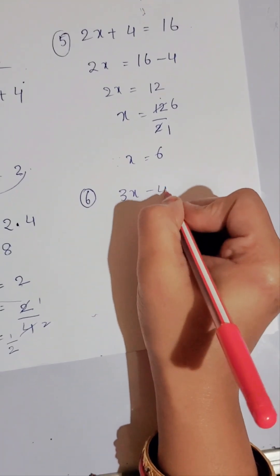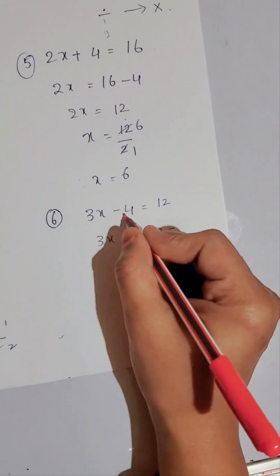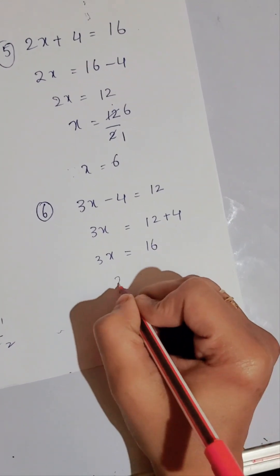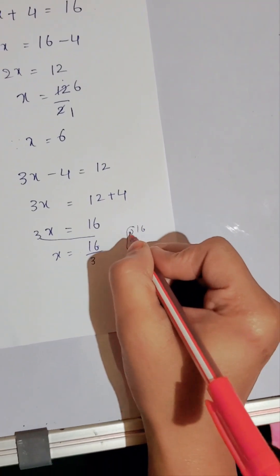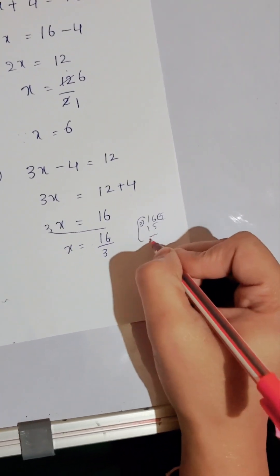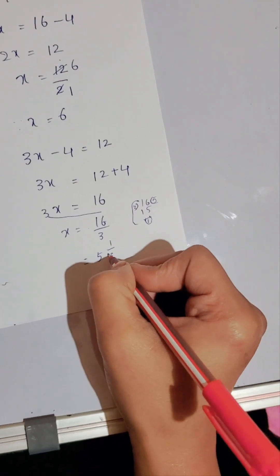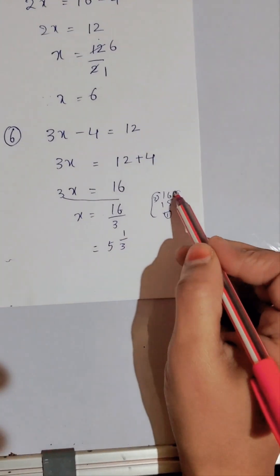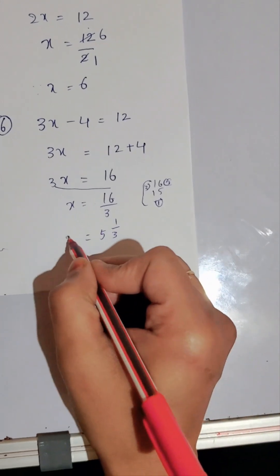Another example: 3x - 4 = 12. Moving -4 to the right side, it becomes plus: 3x = 12 + 4 = 16. Then x = 16 ÷ 3. Since 3 goes into 16 five times with a remainder of 1, this can be written as 5 and 1/3. So x = 5⅓.